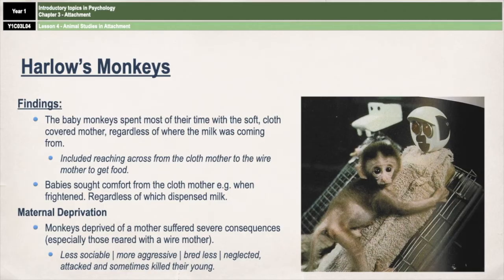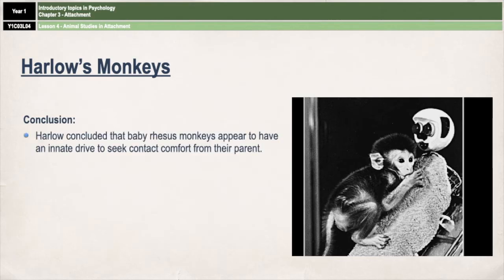Interestingly, if the motherless monkeys spent time with other monkeys, they seemed to be able to recover from the impact of their early experiences — but only if that happened before they were three months old. Monkeys who spent six months or more with their wire mothers without spending any time with other monkeys were unable to recover. From this, Harlow concluded that baby monkeys appear to have an innate drive to seek contact comfort from their parents, suggesting that attachment is formed through an emotional need for security rather than through food.